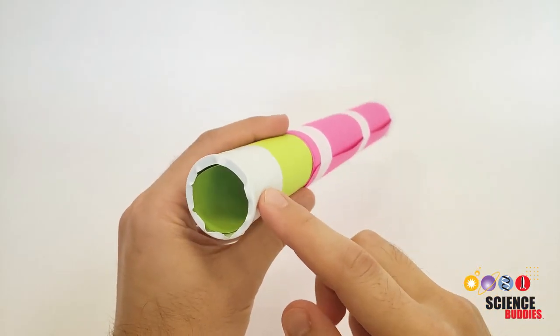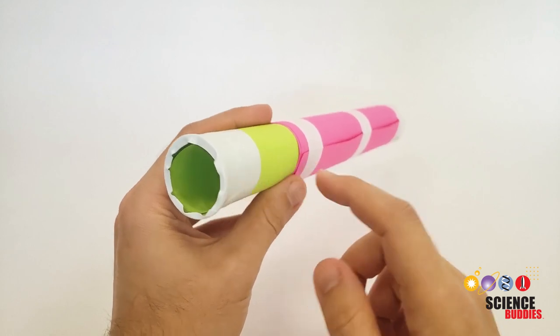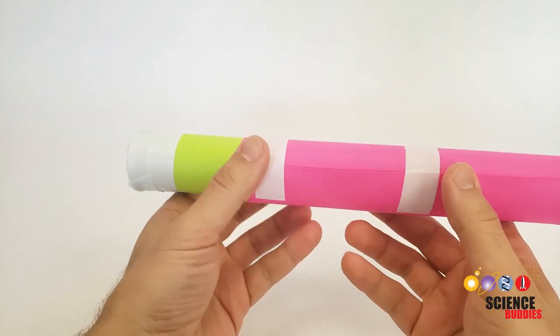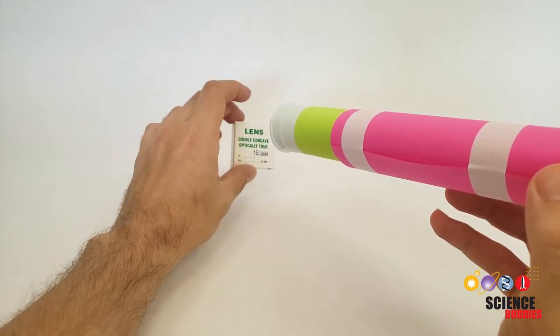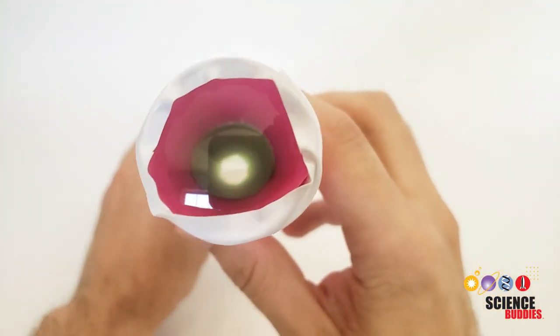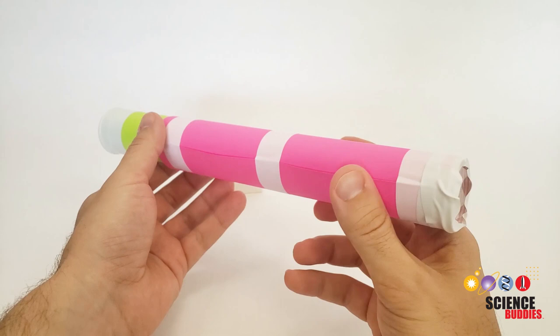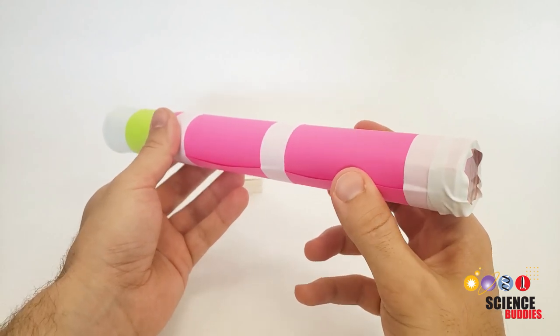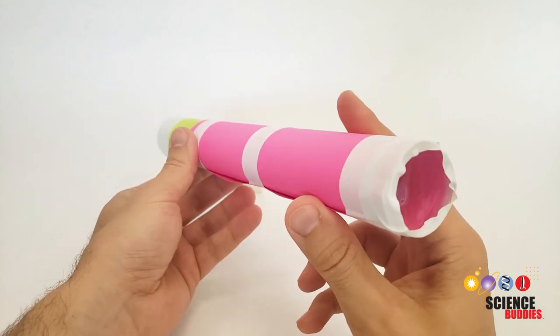So here you can see I've taped that second lens to the second tube. You are now ready to test your telescope. Now your telescope isn't going to work if you try to look at an object that's very close to you. You won't be able to focus it so you should try looking at an object across the room or looking at a window or taking your telescope outside.